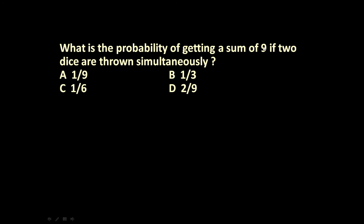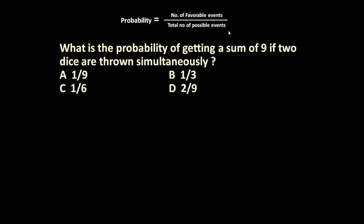So first let us write the formula. The formula is: probability is equal to number of favorable events divided by total number of possible events.